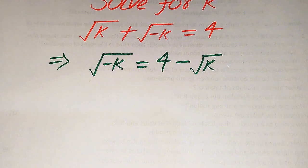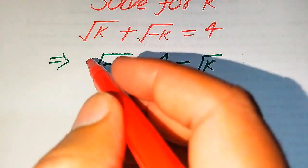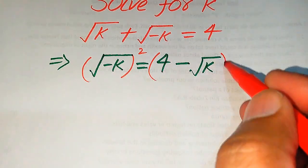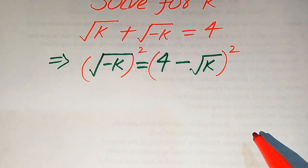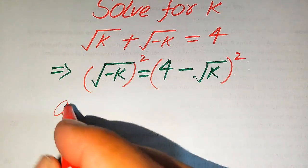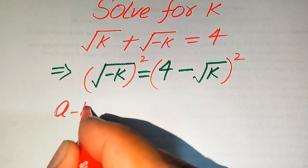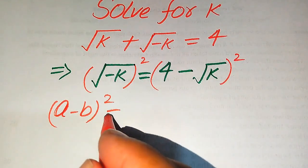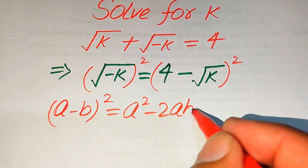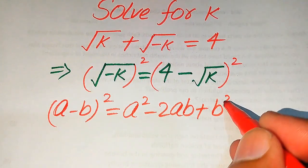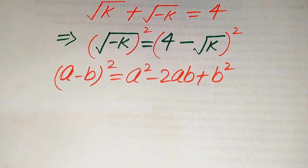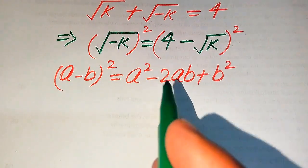In order to remove the square root sign we square both sides. We focus on the right hand side and apply the algebraic formula: (a minus b) squared equals a squared minus 2ab plus b squared.